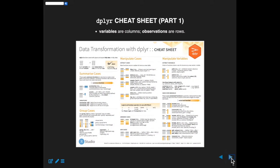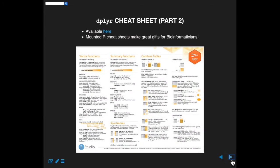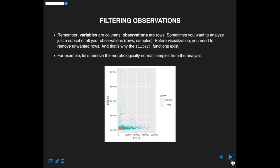RStudio has cheat sheets for different packages, and I highly recommend them — you can print them out or keep them nearby. After a while you just turn to them to figure out what you need. They give an overview of how things work and are two pages long, available from the RStudio website. Let's start with some filtering of observations — remember that variables are columns and rows are your observations, your samples or patients.